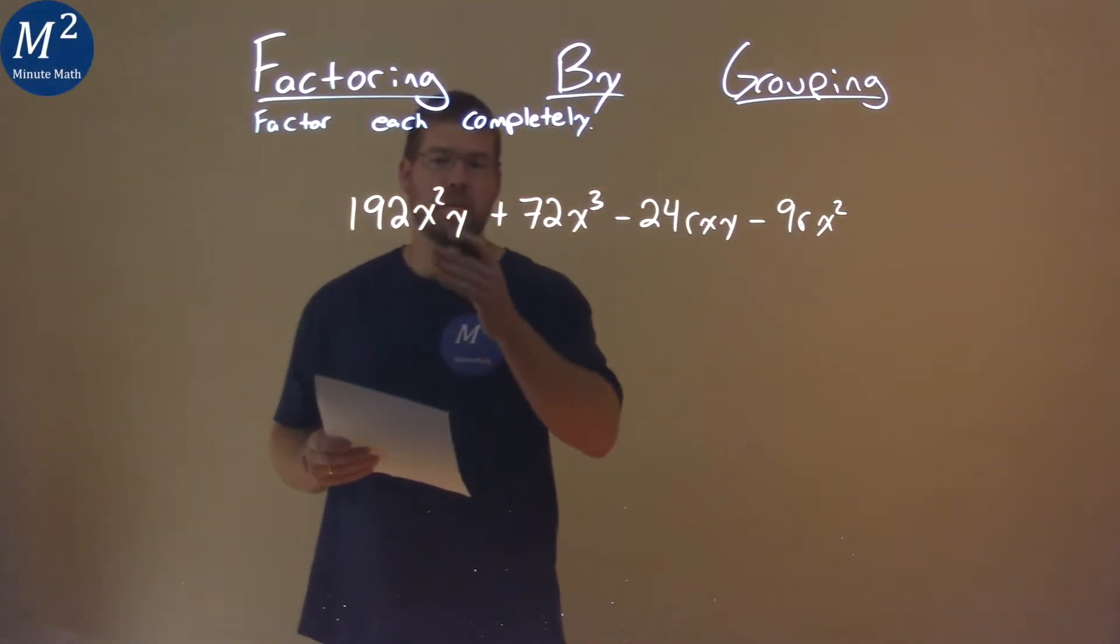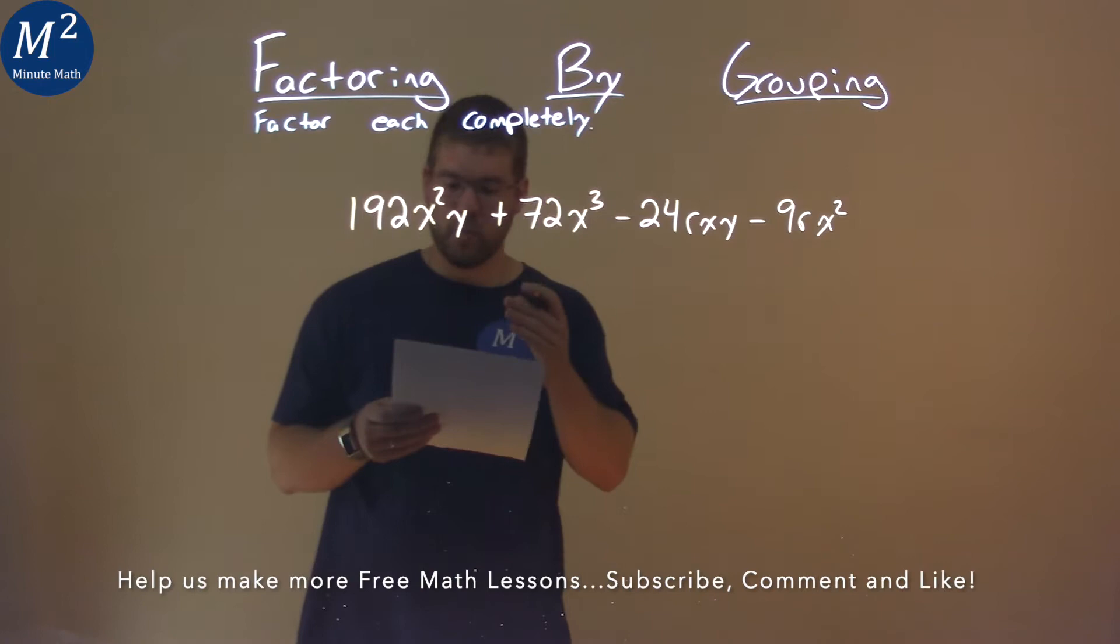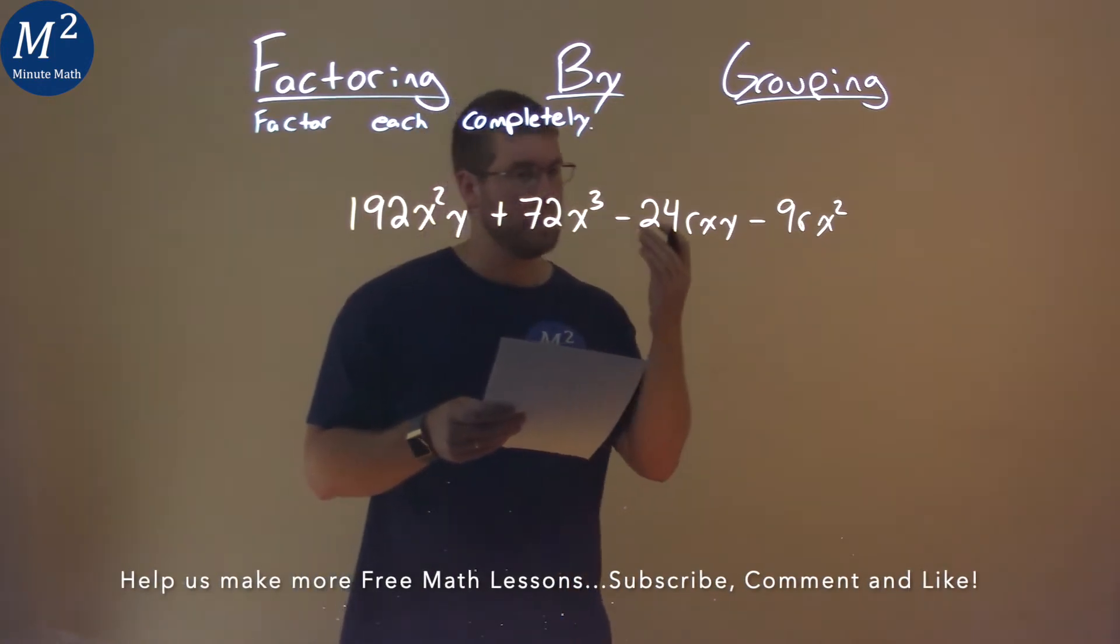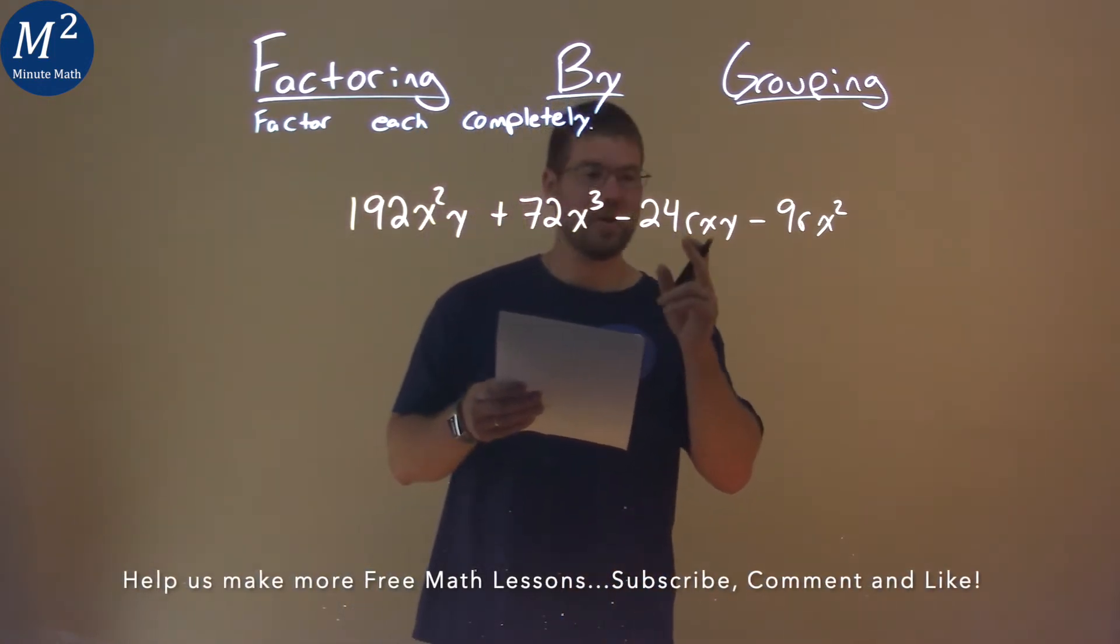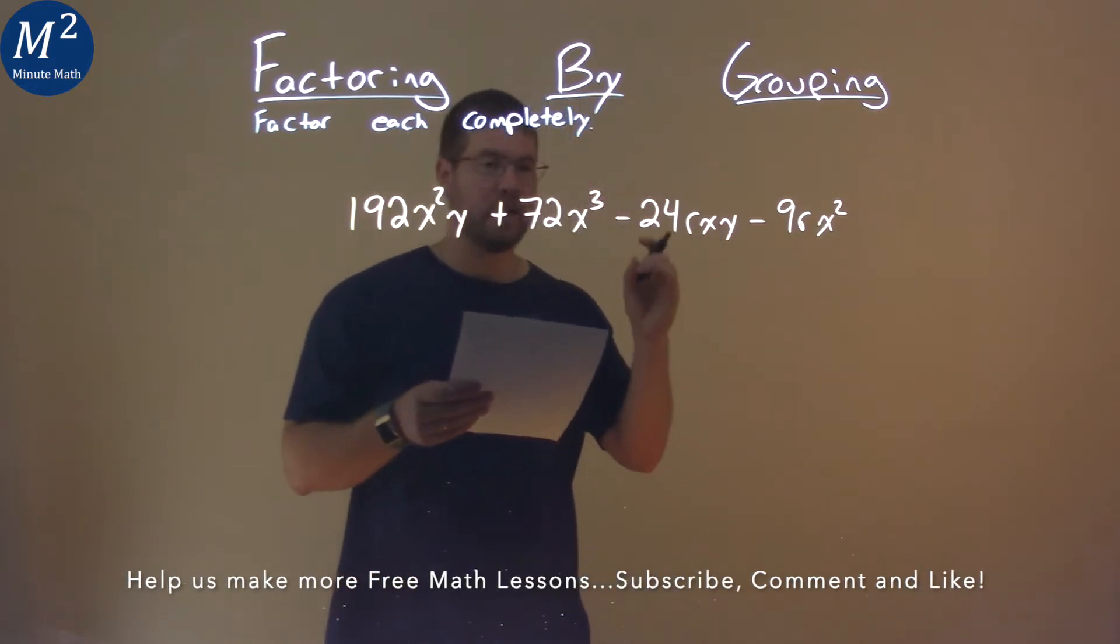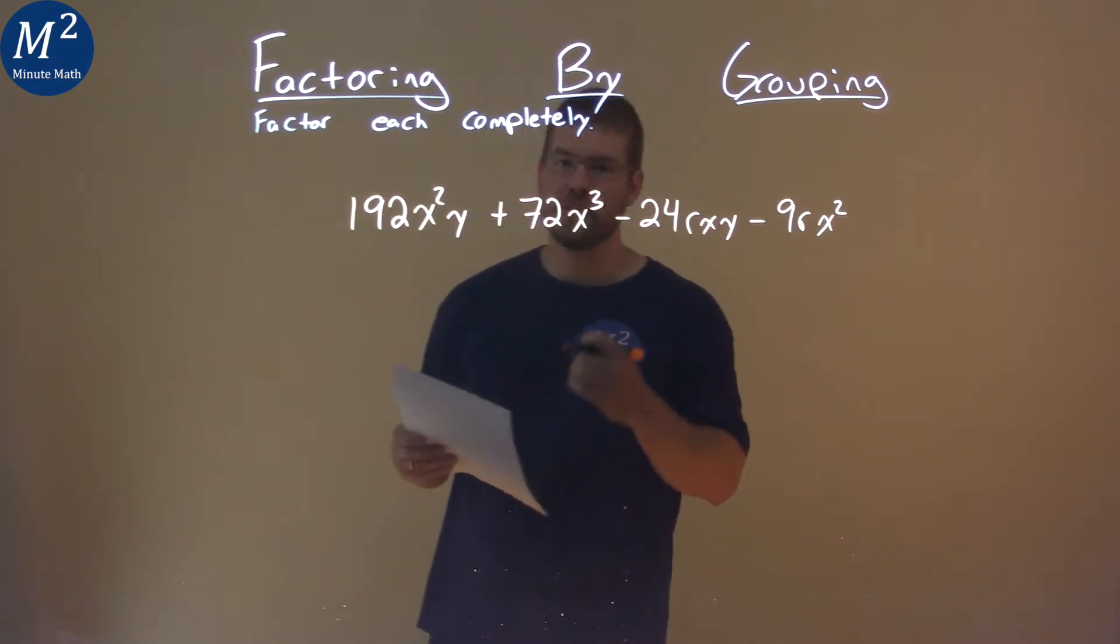We're given this problem right here: 192x²y + 72x³ - 24rxy - 9rx², and we need to factor this completely.